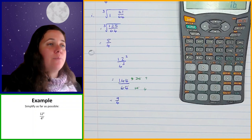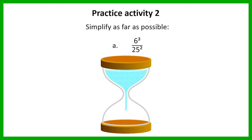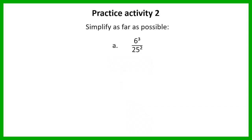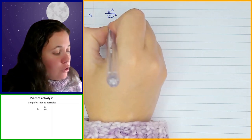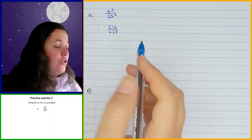Now let's go through a couple that you're going to do for yourself. The first one: we've got 6 cubed over 25 squared. When I work out 6 cubed, that gives me 216, over 25 squared is 625. You can't simplify that any further.